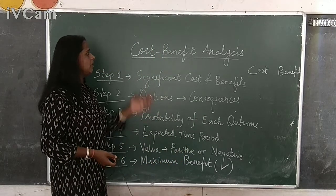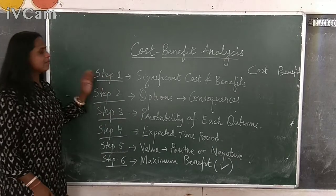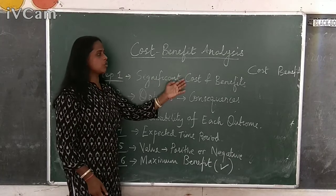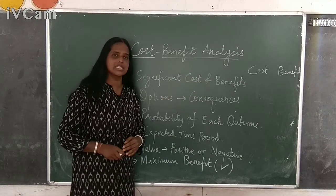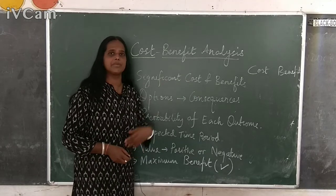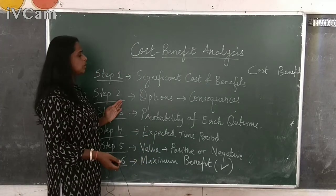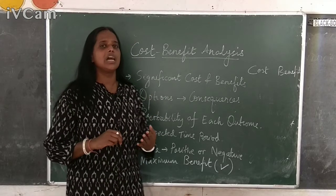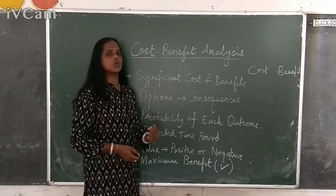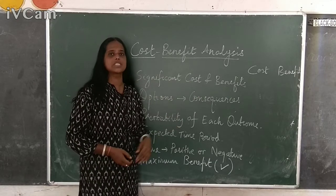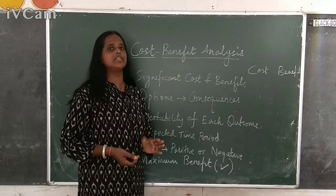What are the steps of cost-benefit analysis? What do the project promoters do? In step one, they write the significant costs and benefits of the project — what is the monetary cost as well as the environmental cost, and what benefit the project is bringing to the environment. Then in step two, they write what options have been undertaken, what processes and actions are being taken, and when those options are chosen, what will be the consequence on the environment. As a project promoter, I need to clearly state my options and also give the consequence of each option I have opted for.